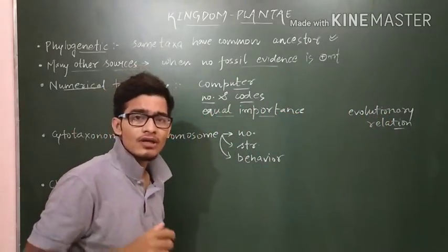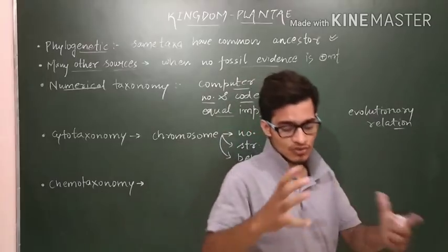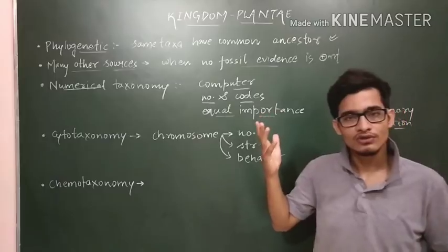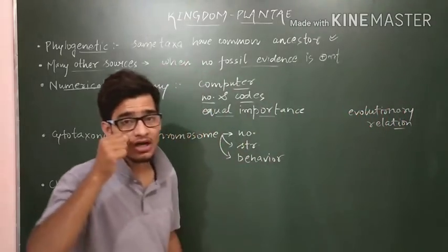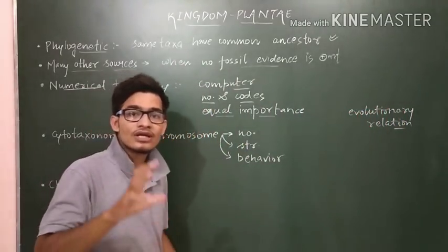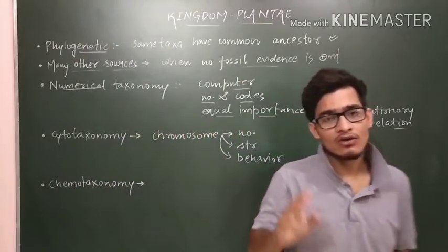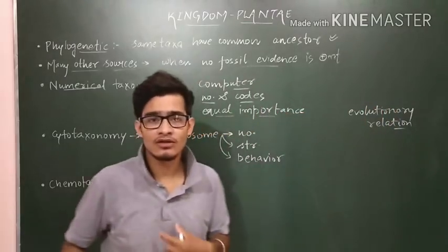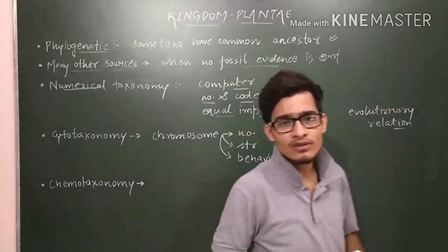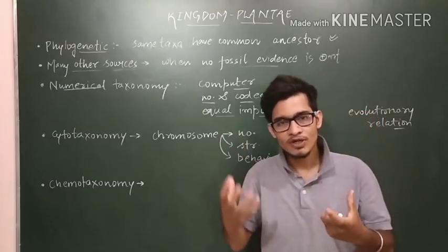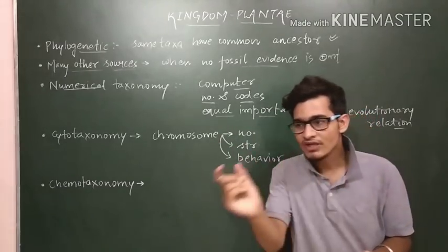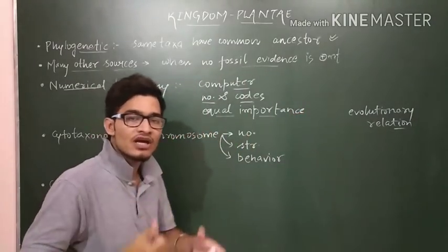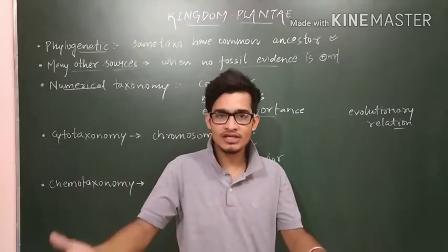Numerical taxonomy can take many characters into consideration at once because they are assigned numbers — you can go up to a thousand. If a particular plant has a thousand specific characters, you give a thousand numbers to them and make a sheet on the computer. After that you can tally that computer sheet with some other plant. If a new plant is discovered, you match each character of both plants — matched characters place them in the same category, unmatched ones place them in separate categories.